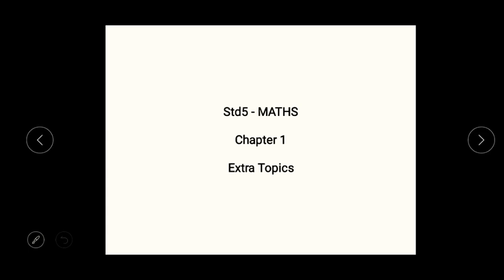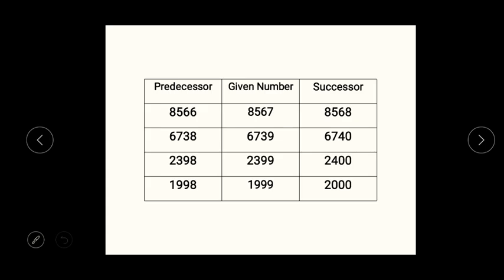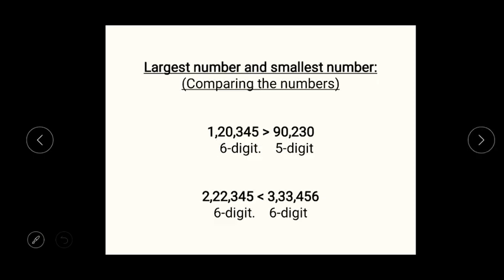Hello students, I hope you have watched all the videos for chapter 1. In this short video we are going to learn only two topics. The first is successor and predecessor — what is successor and what is predecessor — and after that we have the largest number and the smallest number, which is nothing but comparison of numbers. All this topic you might have learned in lower standard, but we have to revise it.